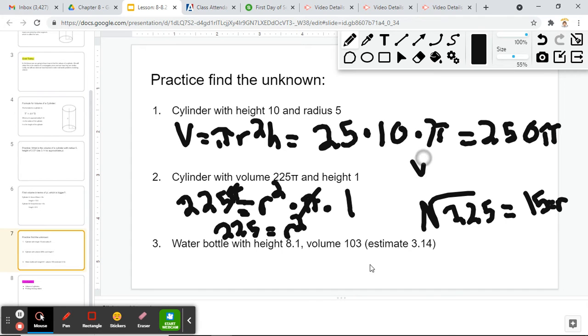So our radius in this problem equals 15. What did we do? We used our formula volume equals πr²h. We knew the volume, we knew the height, we solved for the radius.